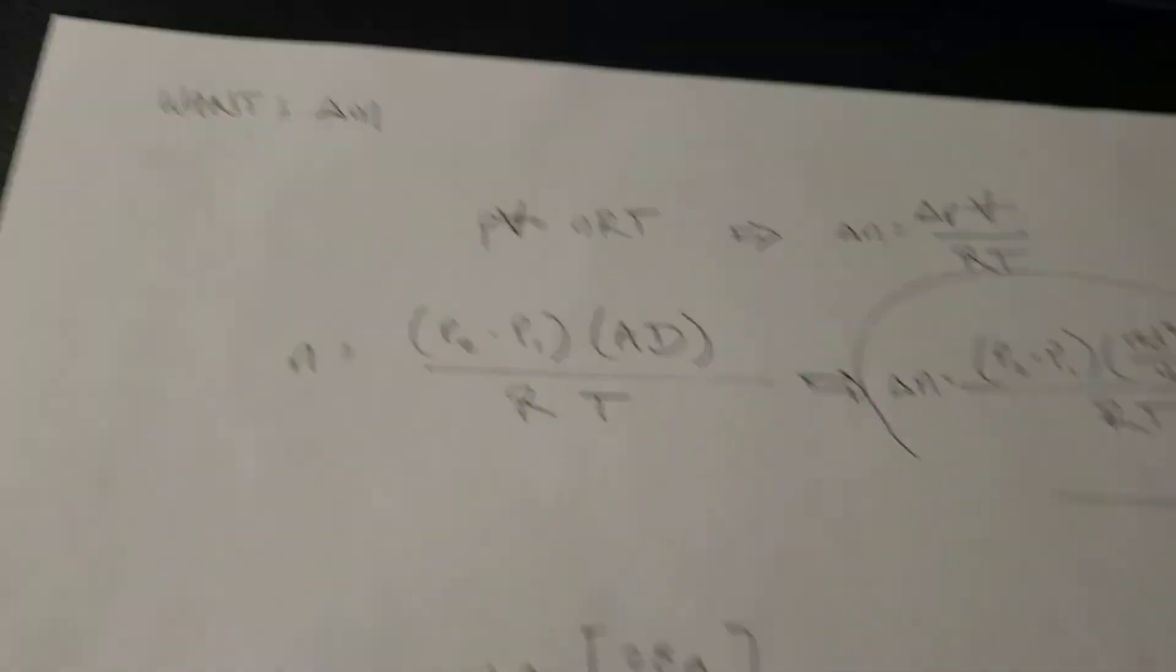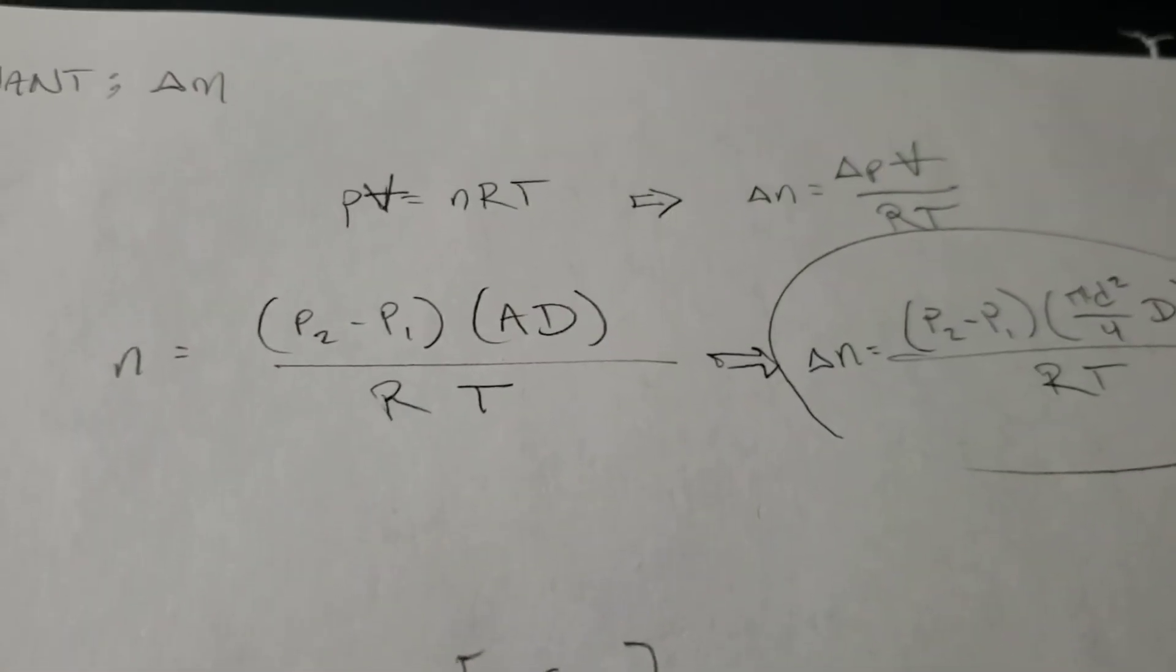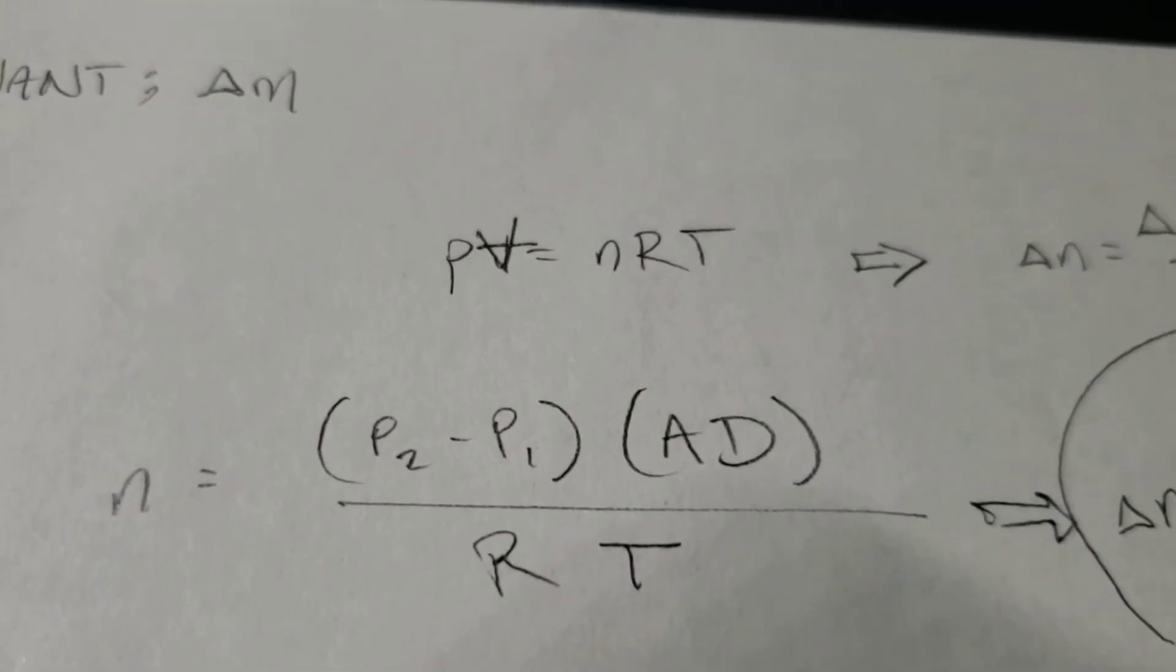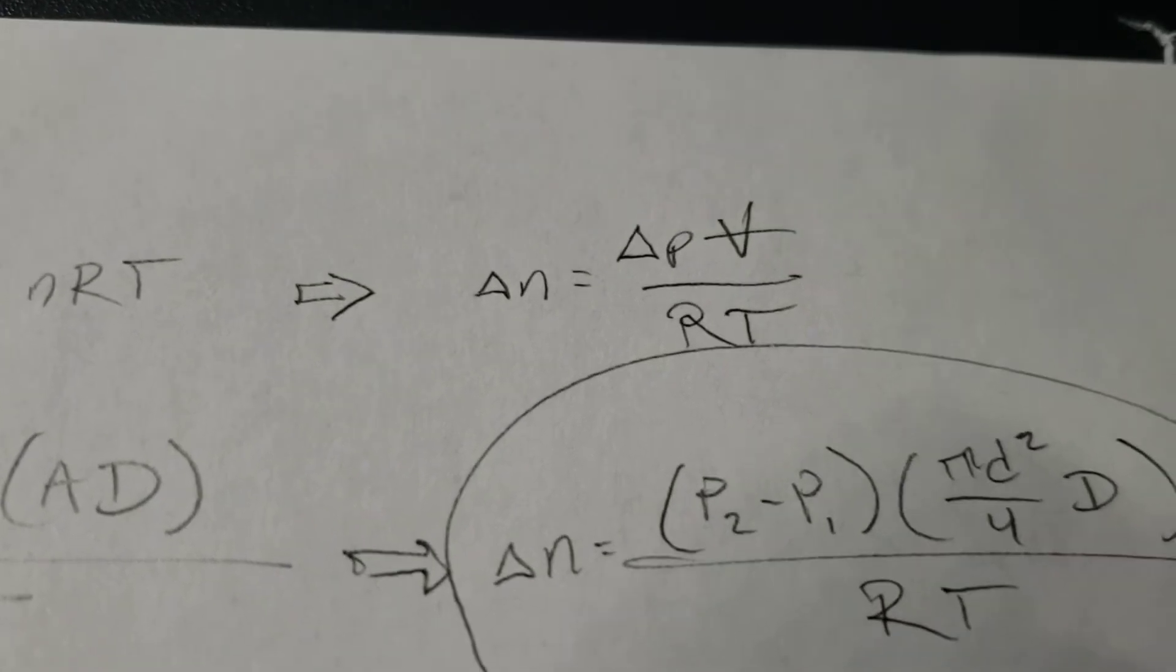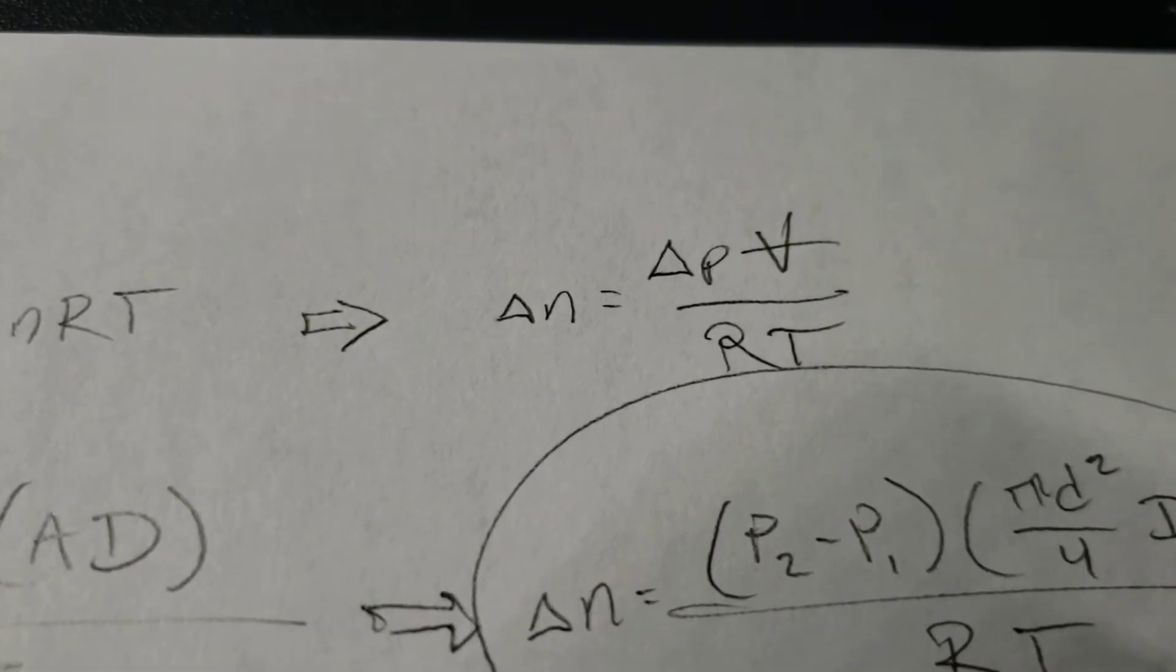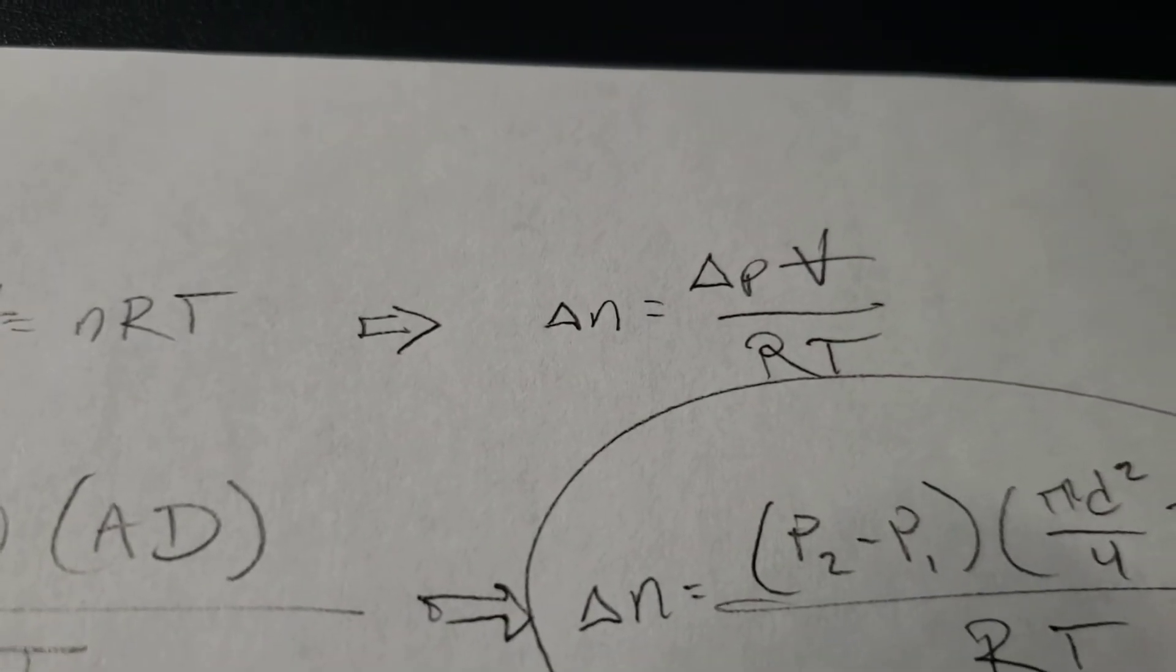Alright. So, again, we're looking for the change in mass. And we're going to do that by finding change in N, or the number of moles. Alright. So, starting with the ideal gas law, we can rearrange it to isolate what we're looking for, which is N. Notice that I changed it from N to delta N because we're looking for the change in number of moles.